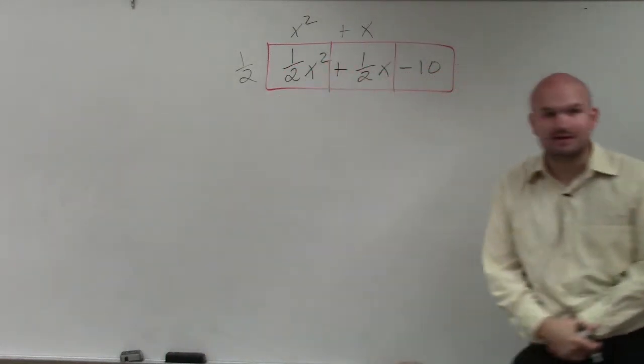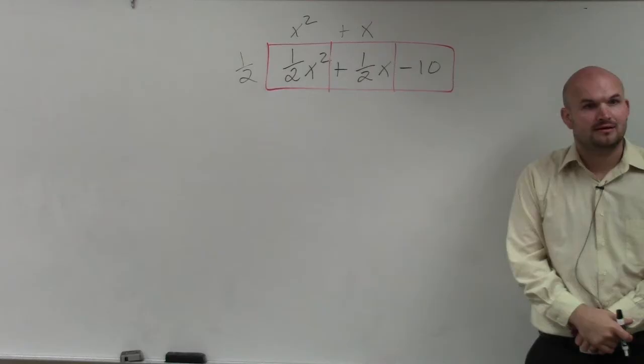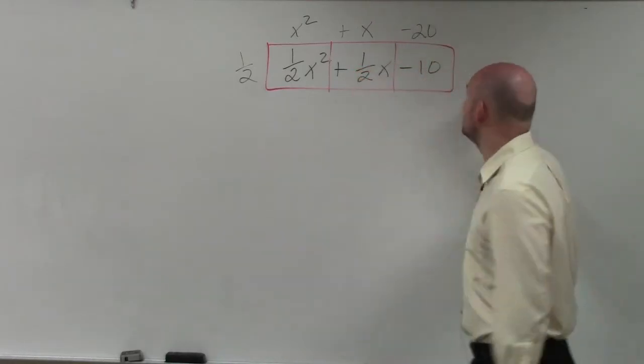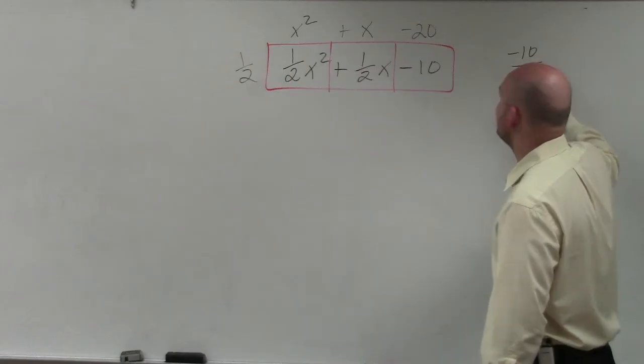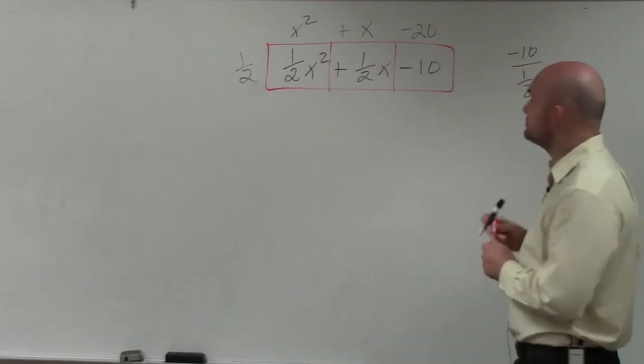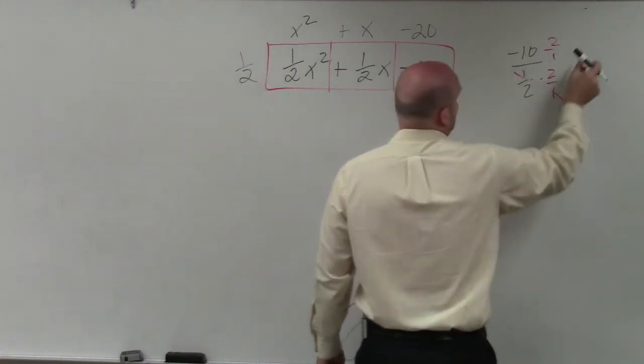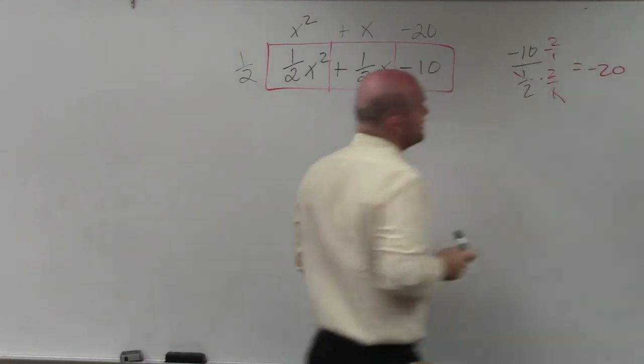And then 1 half times what gives me negative 10? Negative 20. And if you think about it, in reality, what you're doing is taking negative 10 divided by 1 half. And if you remember fraction operations, you multiply by the reciprocal, you get negative 20.